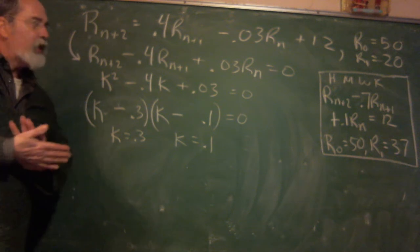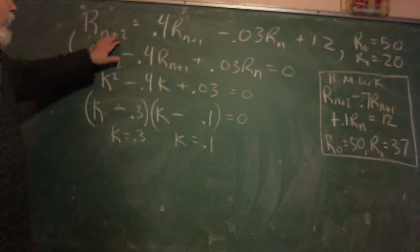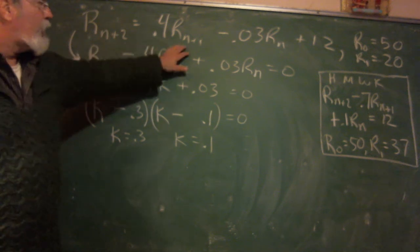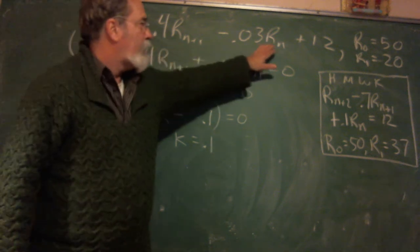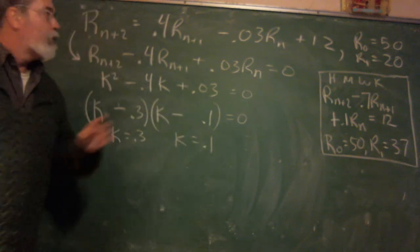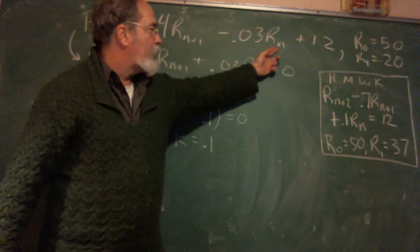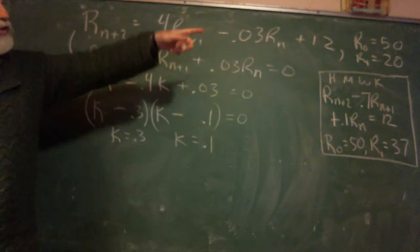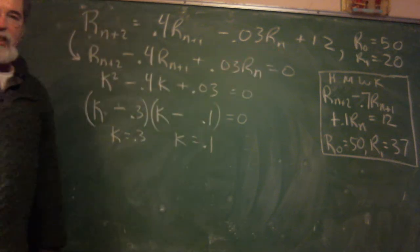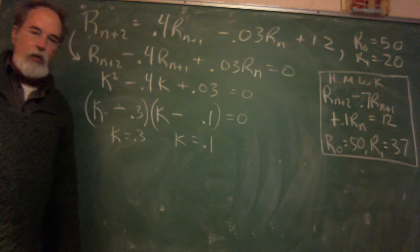So in this problem here, we have r sub n plus 2 equals 0.4 times r sub n plus 1 minus 0.3 times r sub n. It's second-order because there's a difference of 2 between this time step and that time step. And then it's plus 12, and you can see the initial conditions over there. Because it's a second-order, you've got to have two initial conditions.